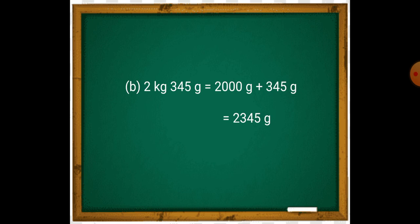So 2 kg is equal to 2,000 grams plus 345 grams is equal to 2,345 grams. Understand?